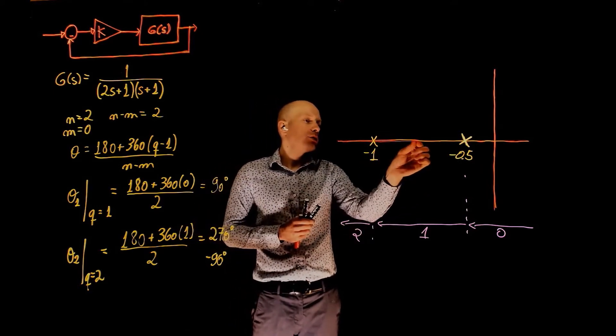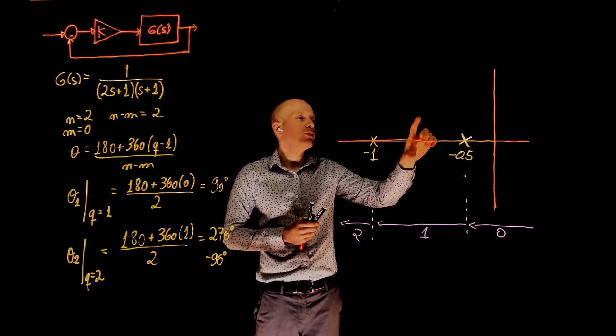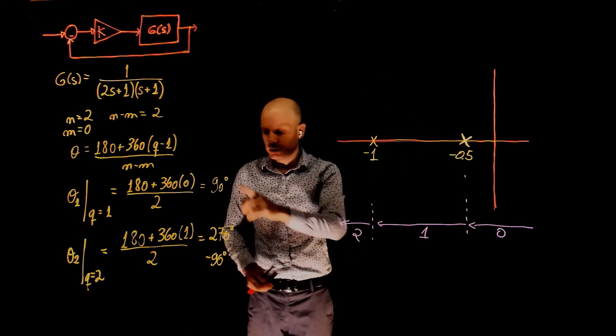This means that they will have to come together and break away from the real axis and go to infinity following these two asymptotes.